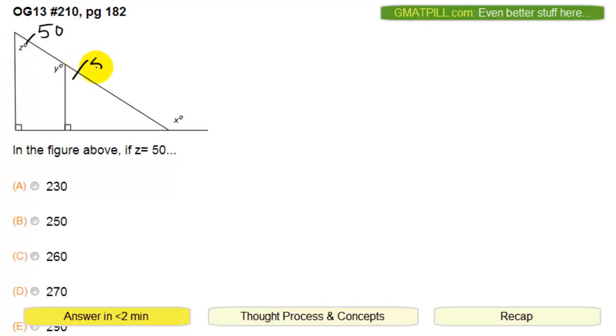So if this is 50 that means this must be 50, and since this is a straight line here then Y has to be 180 minus 50 which is 130. So that's 130.